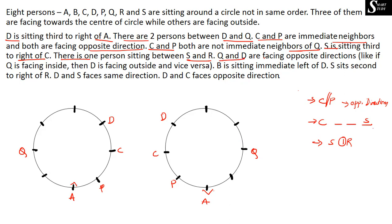The next information is: Q and D are facing opposite directions. So if Q is facing inside then D is facing outside, and vice versa. Q and D are going to face opposite directions — they are not going to face the same direction. If Q is facing center, then D has to face outward. If D is facing center, then Q has to face outward.